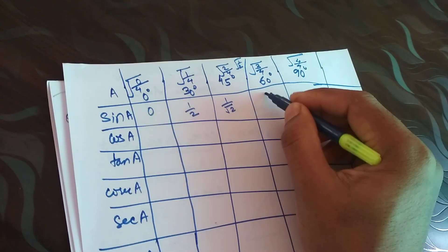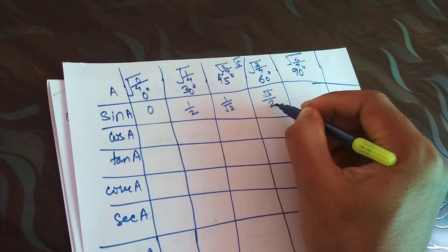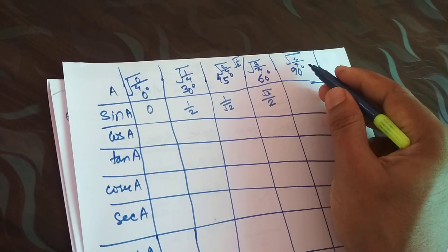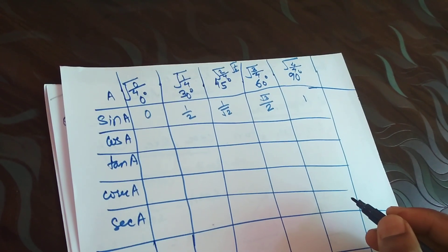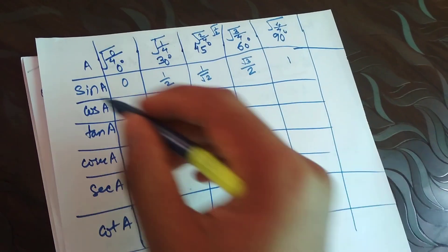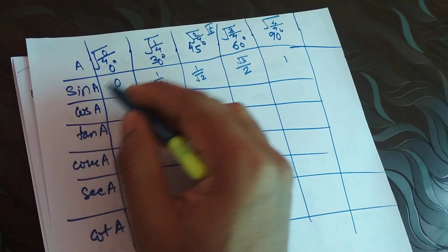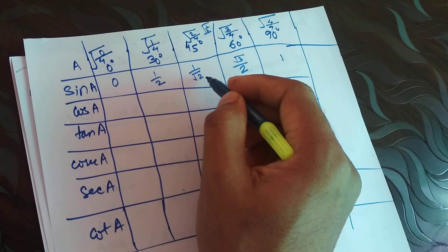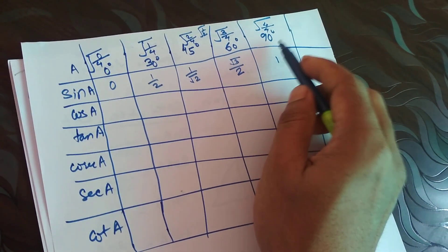3 by root 4, I can consider this as root 3 by 2. And 4 by 4, this is 1. Root of 1 is 1. This is how we are getting the first term: sine of 0 degree is 0, 30 degree is 1 by 2, 45 is 1 by root 2, 60 is root 3 by 2, 90 is 1.